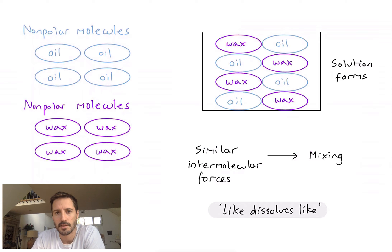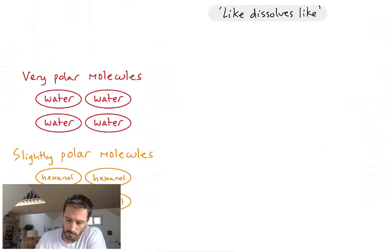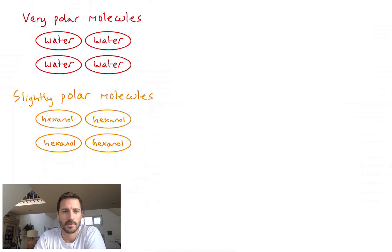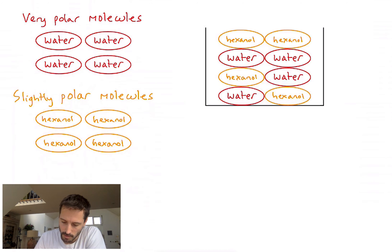Let's take one slightly more nuanced example. What about if I take a very polar molecule like water and a slightly polar molecule like hexanol? What happens when I mix those together? Well, similar to previous examples, they're kind of a bit similar so we form a bit of dissolving.